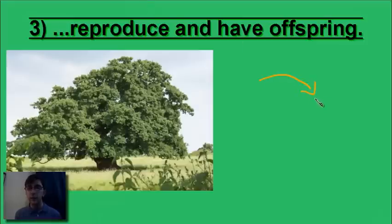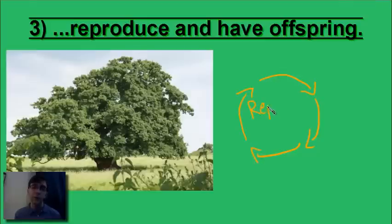It doesn't end. There's no front or back or top or bottom. There is no beginning or end. This is called a reproductive cycle. Parent makes offspring. Offspring becomes parent, which then makes more offspring, and it goes on and on forever.